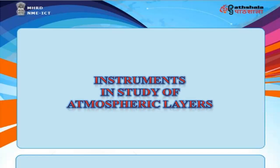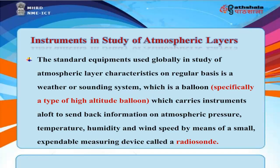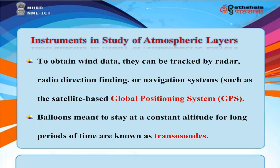Instruments in Study of Atmospheric Layers. The standard equipment used globally is a weather or sounding system — a high-altitude balloon that carries instruments to send back information on atmospheric pressure, temperature, humidity, and wind speed by means of a small expendable measuring device called a radiosonde. To obtain wind data, they can be tracked by radar, radio direction finding, or navigation systems such as GPS. Balloons meant to stay at a constant altitude for long periods are known as transosones.